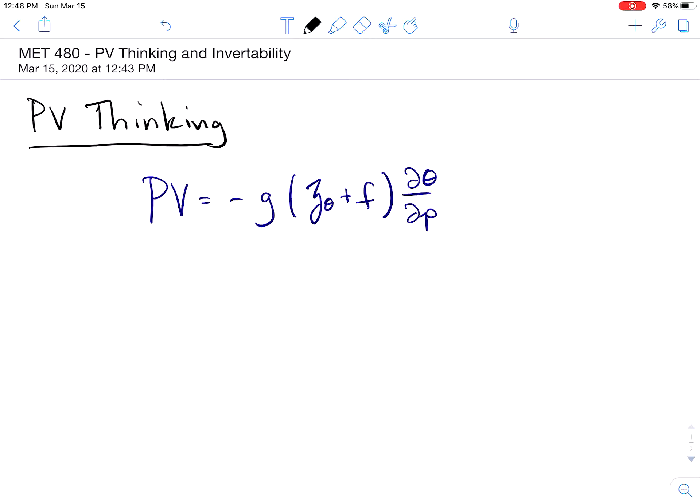In a previous video, we derived potential vorticity equation, which is shown here. PV equals minus G times the quantity zeta theta plus F times d theta dP.